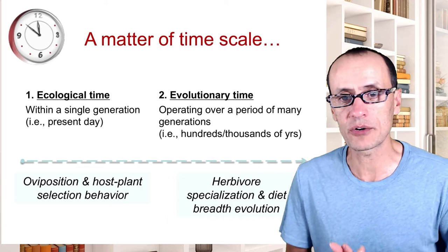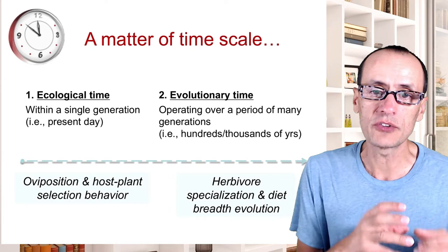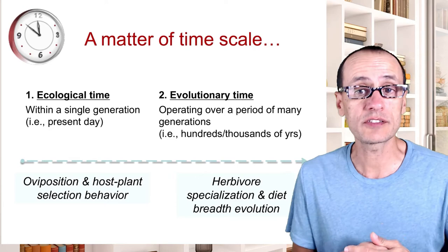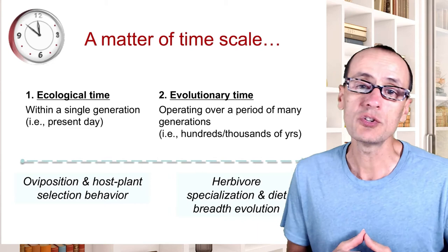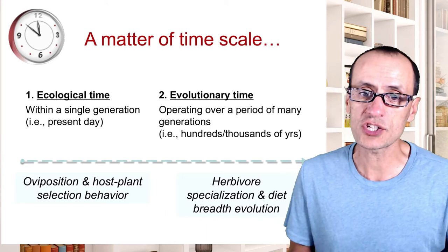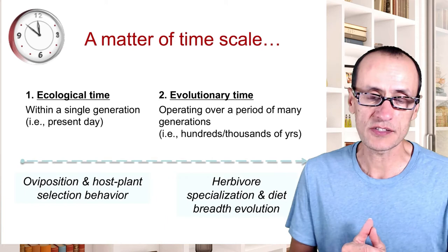At one end of the scale, you may be measuring things like survivorship, host plant selection behavior, traits that may change and make insects or plants susceptible or resistant to each other. At the other end, you may be measuring things like the evolution of specialization, why things have broad diet breadths, diversity of lineages, and so on. We're going to take each one of these two in turn today.